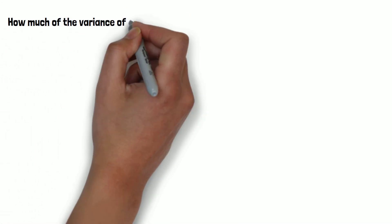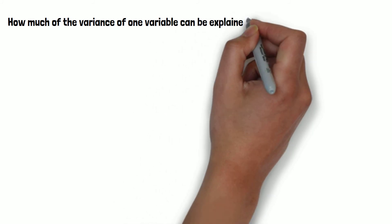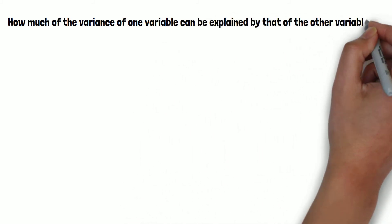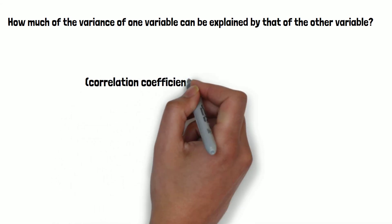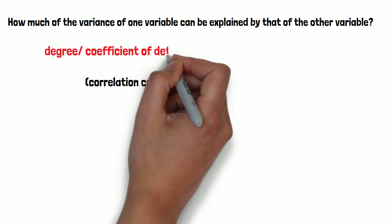Another interesting aspect of the correlation coefficient is that it can be used to evaluate how much of the variance or distribution of one variable can be explained by that of the other variable. For this, we use the square of the correlation coefficient, also called the degree or coefficient of determination.